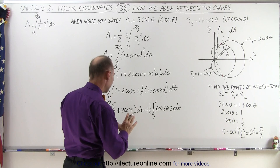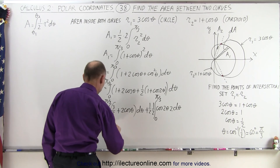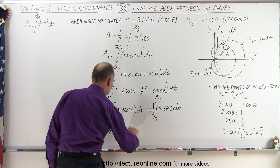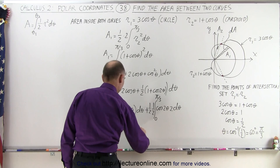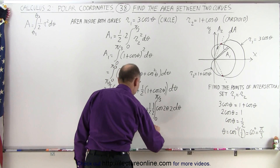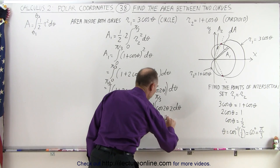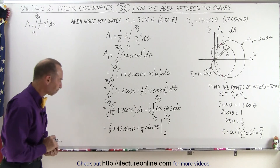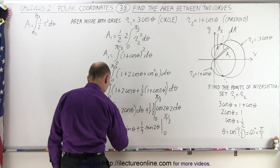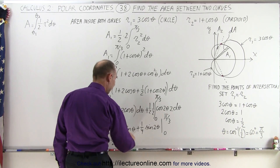Now we're ready to integrate. The integral limits are from 0 to pi over 3. Integrating, we get 3/2 times theta plus 2 times sine of theta, plus 1/4 times sine of 2 theta, everything evaluated from 0 to pi over 3. Plugging in the upper limit, we get pi over 3 times 3/2, which is pi over 2, plus 2 times sine of pi over 3.